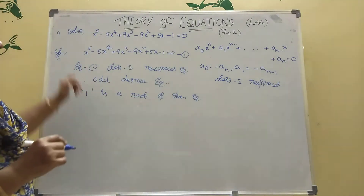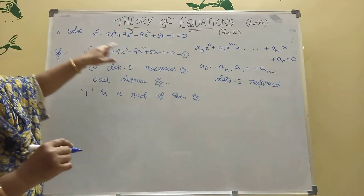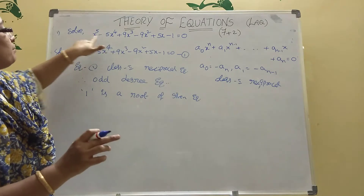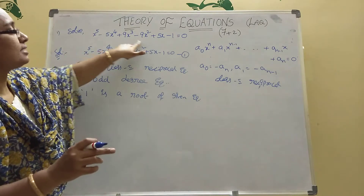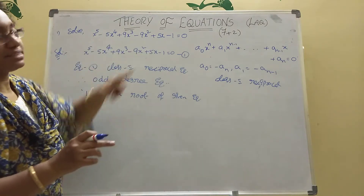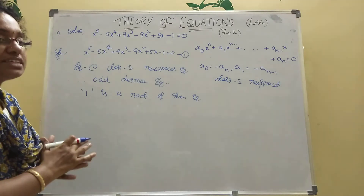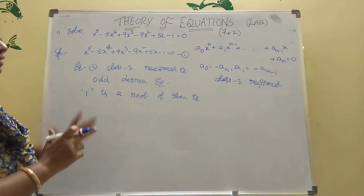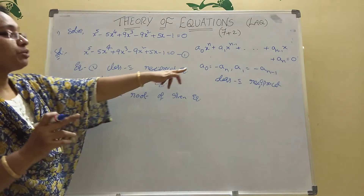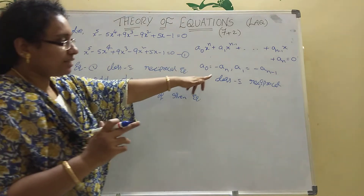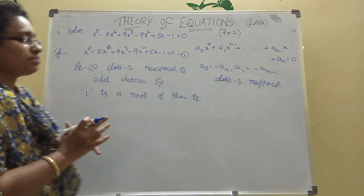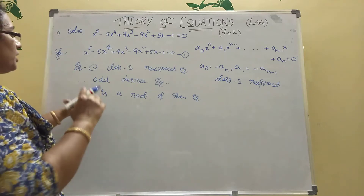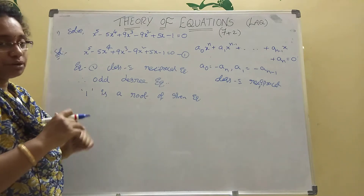Here odd — one exactly cancels. Suppose you take x = 1: then 1 - 5 + 9 - 9 + 5 - 1 = 0, they all cancel. Means x = 1, so 1 is a root of the given equation. When is it possible? When A₀ = -Aₙ and A₁ = -Aₙ₋₁ — that time only it is possible. So x = 1 is a root.